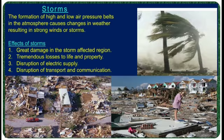The next disaster is storms. The formation of high and low air pressure belts in the atmosphere causes changes in weather, resulting in strong winds or storms. Effects of storms: great damage in the storm-affected region, tremendous losses to life and property, and disruption of electricity supply, transport and communication.